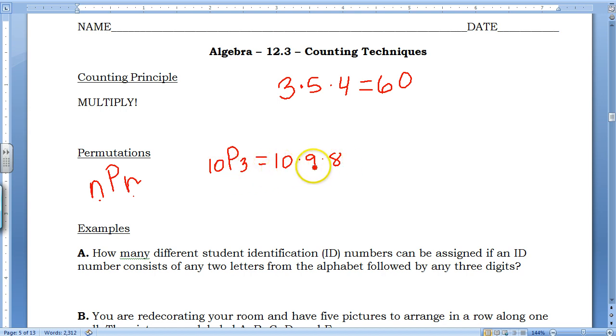The first number tells you what to start with, and the second number tells you how many to use, and you always count down, because the idea is if you have ten pictures, you put one on the wall, now there's nine left, you put another one on the wall, now there's eight left. So another one, how about 12P4 would be 12 times 11 times 10 times 9.